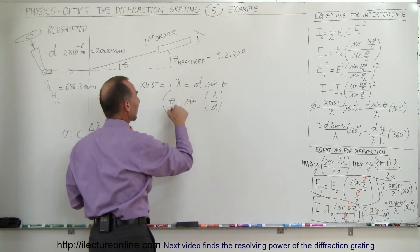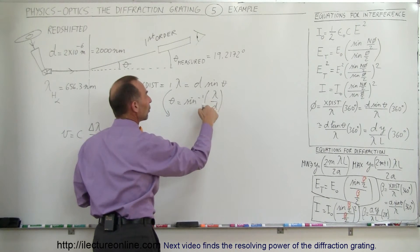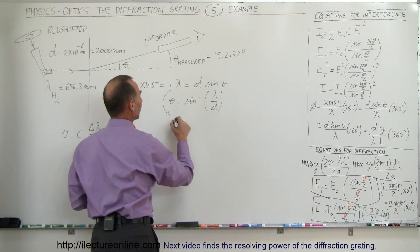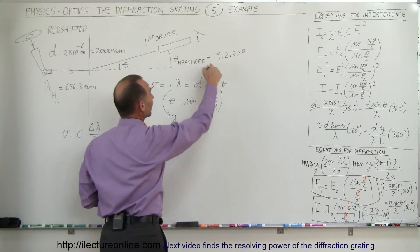Instead of finding theta knowing what lambda is and knowing what d is, we're going to find lambda knowing what d is and having measured theta. In this case, lambda is going to be equal to d times the sine of theta.